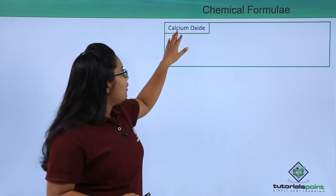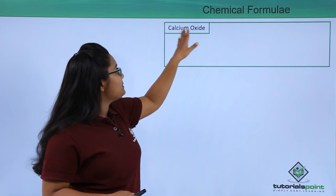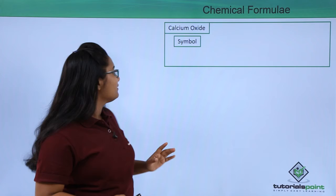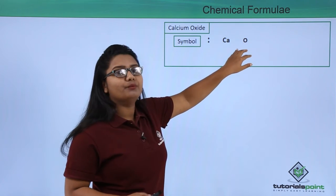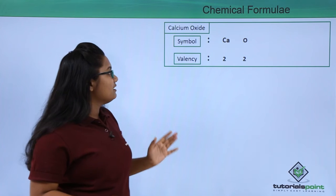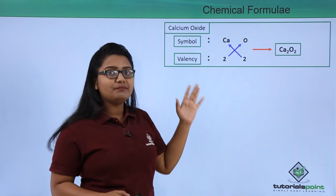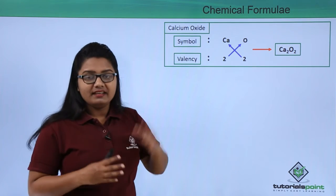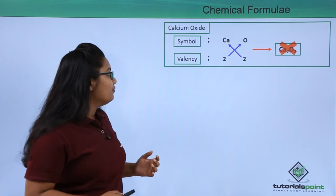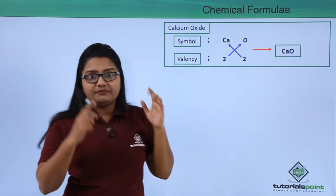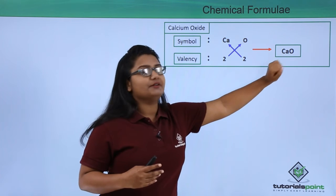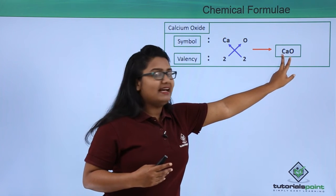For calcium oxide, it is composed of calcium and oxygen atoms. We write symbols Ca and O, and both have a valency of 2. Following the crossover procedure gives Ca₂O₂, but since both atoms have the same valency, we simplify and write it as CaO. Whenever a compound has atoms with the same valency, we do not write the subscripts — we simply write CaO.